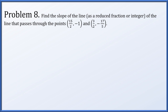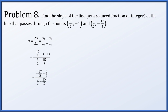In problem eight, find the slope of the line passing through two given points, expressed as a reduced fraction or integer. We compute delta y over delta x, which is y2 minus y1 over x2 minus x1. Computing negative 17 over 5 minus negative 1 gives negative 12 over 5 in the numerator. The denominator is 3 over 2 minus 15 over 2, which gives negative 12 over 2. Dividing negative 12 over 5 by negative 12 over 2 is equivalent to multiplying by negative 2 over 12; the 12s and negatives cancel, giving slope of 2 fifths.